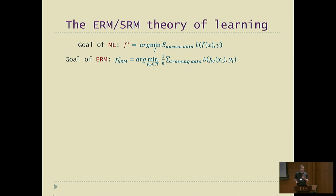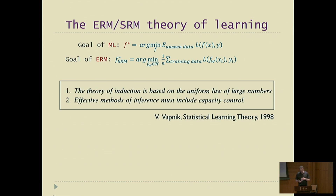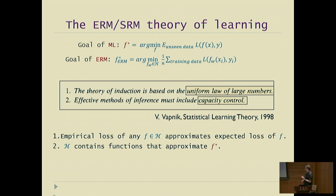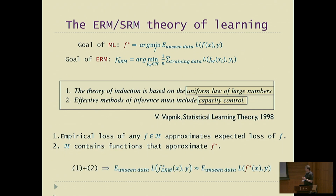How do you compare these? According to Vapnik, there are two aspects. First, the theory of induction is based on the uniform law of large numbers. Second, effective methods of inference must include capacity control. Uniform laws of large numbers say that the empirical loss of any function in H is approximately equal to the expected loss for that function. Capacity control is essentially saying that H contains functions that approximate the goal of machine learning, F star. If you have both, it's not hard to see that your ERM solution is nearly optimal.